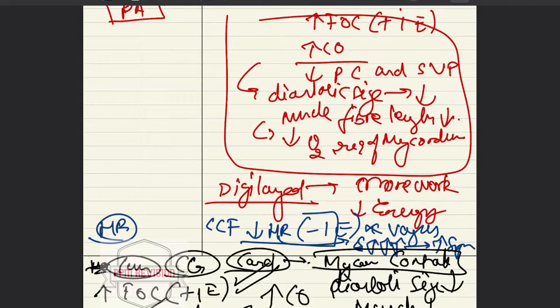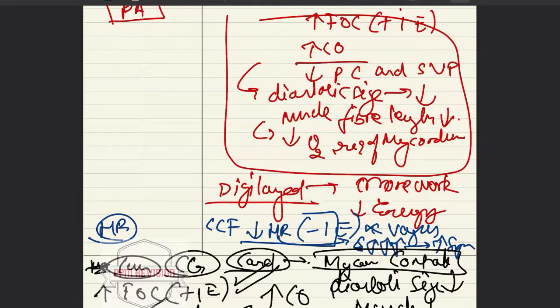Regarding heart rate: in CCF, at low doses it decreases heart rate, whereas in toxic doses it increases heart rate. This decrease in heart rate is due to stimulation of the vagus.